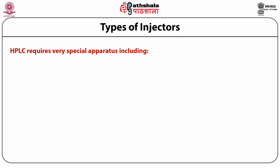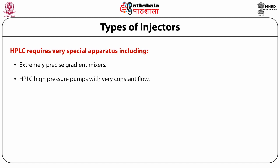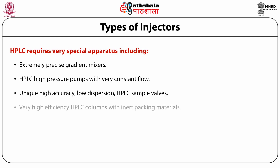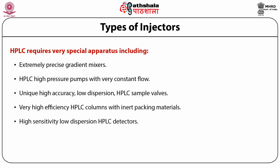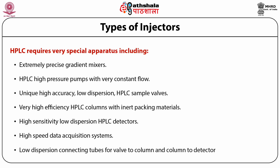Manual sample injectors used in HPLC transfer the sample from a syringe to a constant volume sample loop connected to the stream of high-pressure mobile phase through a 6-port rotary injection valve. Automatic injection systems consist of auto-samplers that draw samples mechanically. Today's HPLC requires very special apparatus including: extremely precise gradient mixtures; high pressure pumps with very constant flow; unique high accuracy low dispersion HPLC sample valves; very high efficiency HPLC columns with inert packing materials; high sensitivity low dispersion HPLC detectors; high speed data acquisition systems; and low dispersion connecting tubes for valve to column and column to detector.